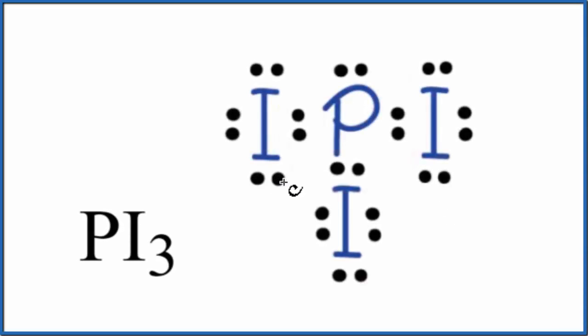In this video, we'll look at the molecular geometry and bond angles for PI3. This is phosphorus triiodide.